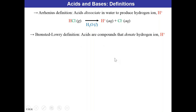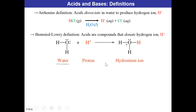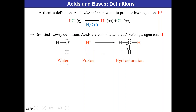The Brønsted-Lowry definition describes acids as compounds that donate the hydrogen ion or proton. In this case, water plus H+ yields the hydronium ion, where that H+ would come from, for instance, hydrochloric acid. Both definitions are considered reasonable. The Arrhenius definition: acids dissociate and produce H+. The Brønsted-Lowry definition: acids donate that hydrogen ion.